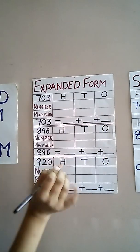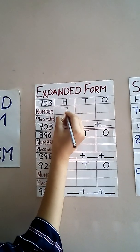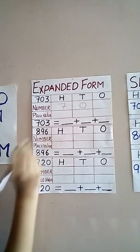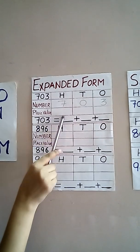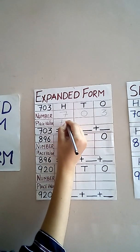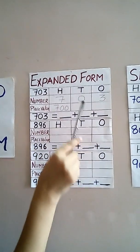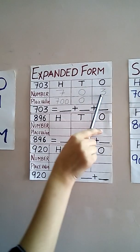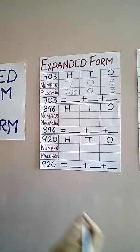I will show you. 703. First of all, in the hundreds place, which is the number 7. So write down 7 here. Then tens place, which number 0. Then ones place, which number 3. Now, here the place value is written. We have to write the place value of 7. It is 100. So write down the place value of 7, that is 100. And the place value of 0 — tens — but it is 0, so its place value will remain 0 only. 3 is in the ones digit, so its place value will be 3 only.